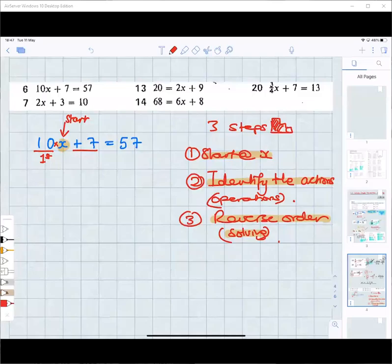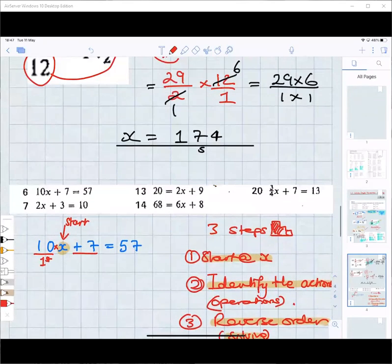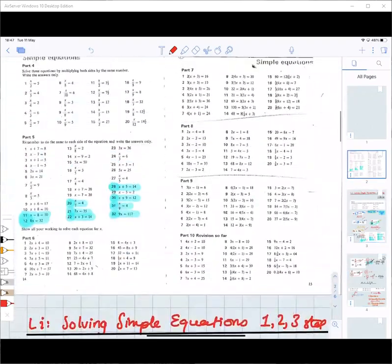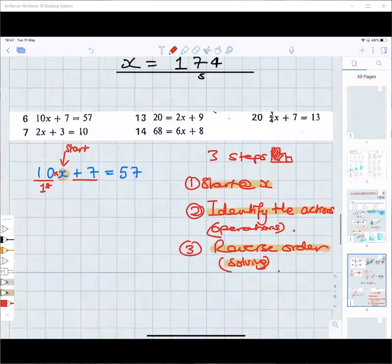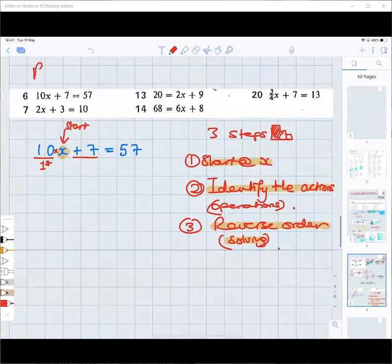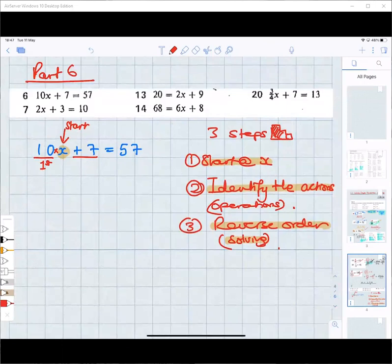Okay, Omeza. So we're looking at two-part questions now. This question comes from part six. Now we're doing question number six at the moment, which are copied out in blue. Can you just quickly go over again, please? Because we weren't recording then. So, Omeza, can you explain to us what the three steps are, please? We have three steps, and the first step is to start at X. The second step is to identify the actions, or you can call it operations. And the third step is to solve it in reverse order.